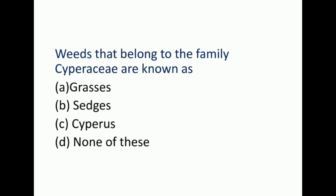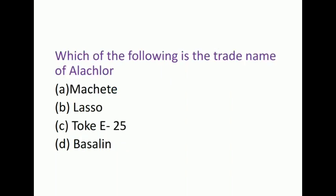Next question: Weeds that belong to the family Cyperaceae are known as? Options are grasses, sedges, cypress, and none of these. The right answer is sedges. Here students will be confused with the cypress. Cypress genus belong to the family Cupressaceae. Grasses belong to the family Gramineae or Poaceae. It includes Cyperus, doob grass, Johnson grass, etc.